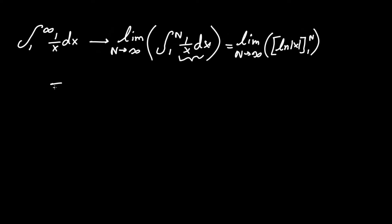So now let's plug in the values. The limit as n approaches infinity is ln absolute value of n, the upper bound, minus ln the lower bound, which is 1.